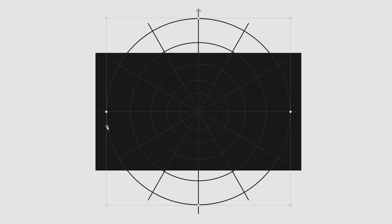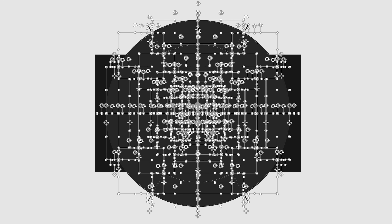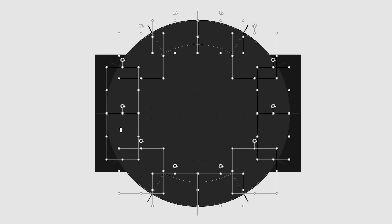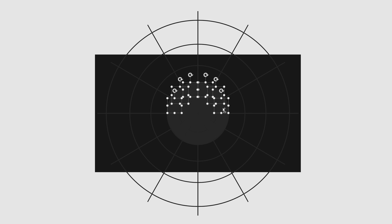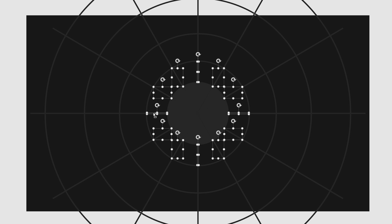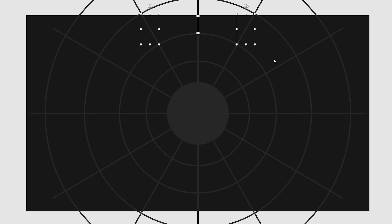Holding the Ctrl button, select these two shapes that we just combined, then from Merge Shape, select Fragment. You will get many shapes — but don't worry about it. I will delete some of the unnecessary shapes so that we can easily identify the exact shapes we need. Simply holding Ctrl, select these shapes one by one and press Delete to get rid of them. We just need these rectangles that we can use as wheels or gears. Holding Ctrl, select these shapes one by one from each section and press Ctrl G to group them together.